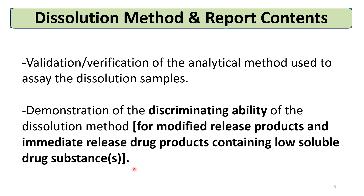If the drug product contains BCS class 1 or BCS class 3 drug substances, which are highly soluble, and the release is not modified, then a general criterion can be given — such as 80% release or 80% Q in 15 or 30 minutes — based on the ICH M9 guideline and the FDA dissolution guidance of 2018. These will be covered in detail in upcoming slides.